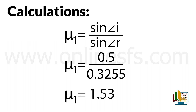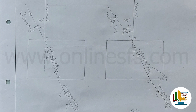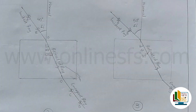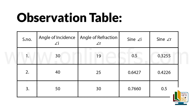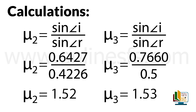Similar manner mein hum apni second and third observations lenge. For our second observation, angle of incidence equals to 40 degrees and the angle of refraction was found to be 25 degrees. Third observation ke liye angle of incidence was 50 degrees and the angle of refraction was found to be 30 degrees. Observation table mein angle of incidence, angle of refraction, sine of angle I and sine of angle R note down kar denge. Similar to the calculations of our first observation, we will calculate the refractive index for our second and third observations by taking the ratio between sine angle I and sine angle R.